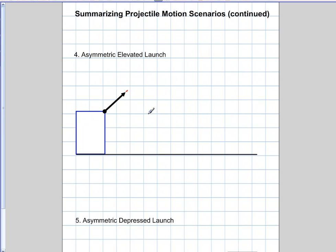The next two situations are probably the most difficult because we don't have symmetrical tricks, and there's a multiple family of solutions depending on what you want to solve for. The first is an asymmetric elevated launch. In this case, you have a launch angle, and let's say we want to find information about where it lands. We simply don't have symmetry to work with — the initial angle and the final angle are definitely not the same.